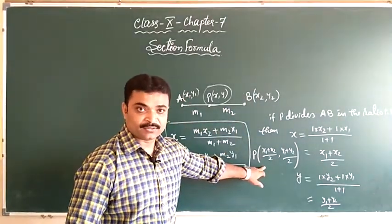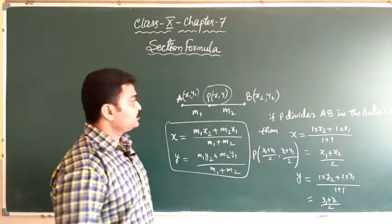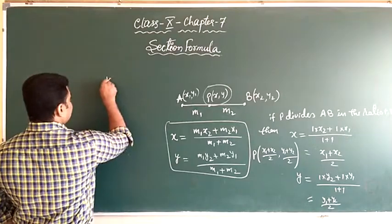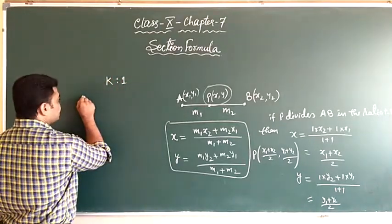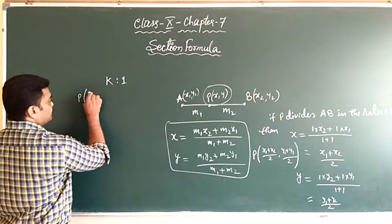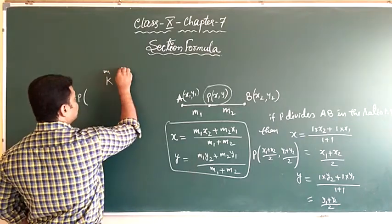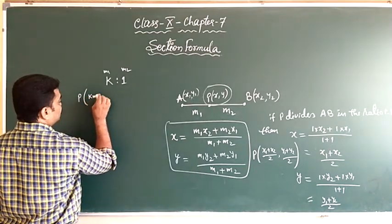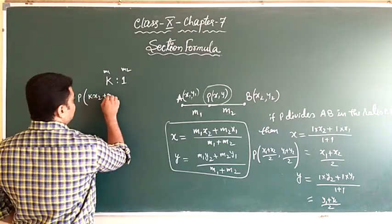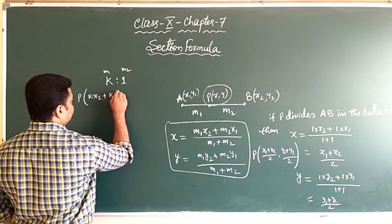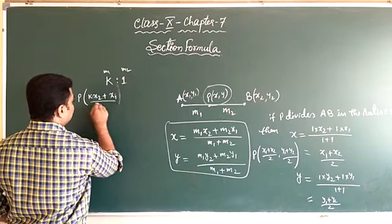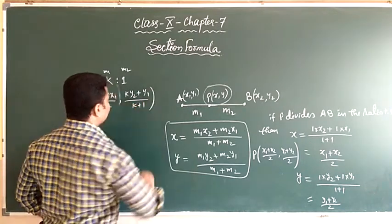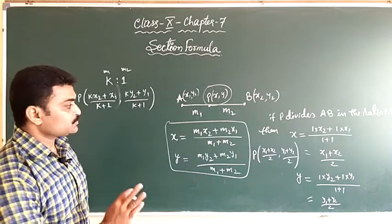Now suppose point P divides AB in the ratio k:1. Then the coordinates of P will be: x = (k·x2 + x1) / (k + 1) and y = (k·y2 + y1) / (k + 1). These will be the coordinates of point P. Please pause and note this down.